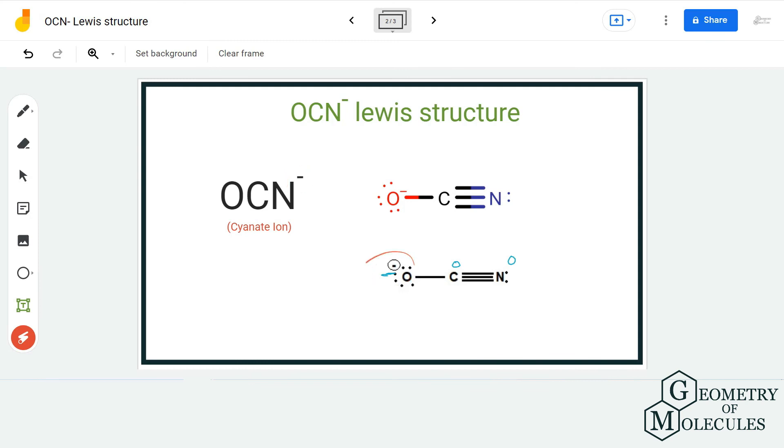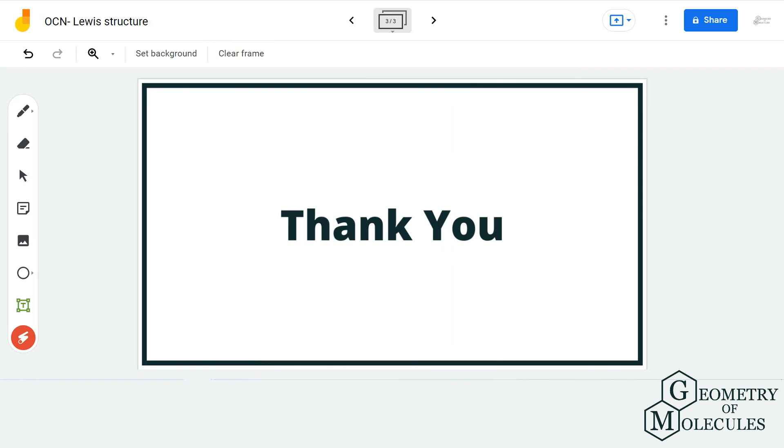As oxygen has a -1 charge, it is completely fine because it is the most electronegative atom here. So I hope this video helps you to understand the Lewis structure of OCN⁻ ion. For more such videos on Lewis structure, molecular geometry, and polarity of molecules, make sure to subscribe to our channel. Thank you for watching.